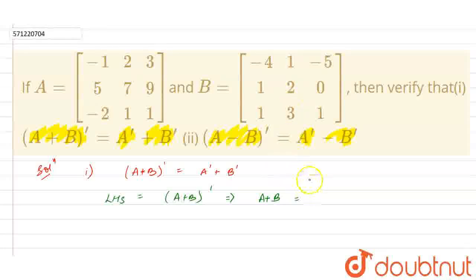So after doing the calculation, that is minus 1 plus minus 4 is minus 5, 2 plus 1 is 3, 3 minus 5 is minus 2. Similarly, 5 plus 1 is 6, this will become 9, 9 plus 0 is 9.